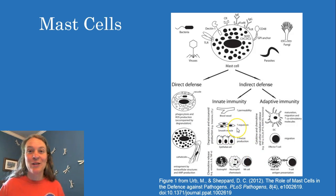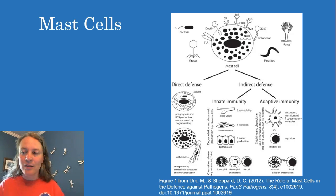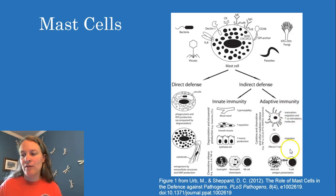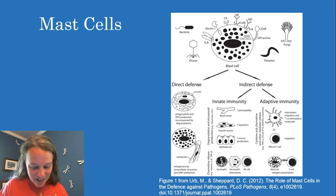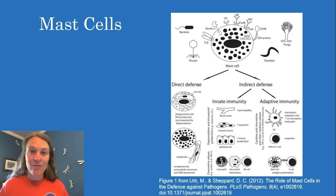Mast cells potentially have an interesting role in helping with expulsion of parasites via smooth muscles. They can increase mucus production, which helps in the fight against pathogens. They're also going to call in other types of immune cells, in addition to working with some of the cells in adaptive immunity to make that go more effectively. This paper is open access — you can read it for free — and I highly encourage you to check it out if you have a particular interest in mast cells and their role in inflammation.